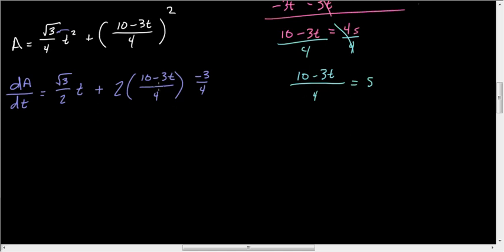I have to multiply that by the derivative of the inside. The derivative of the inside is going to be negative 3 quarters. This is a constant. The derivative with respect to T is just negative 3 quarters times 1, which is negative 3 quarters.